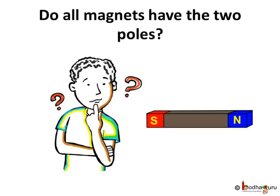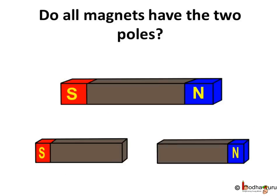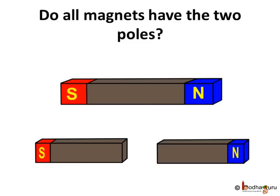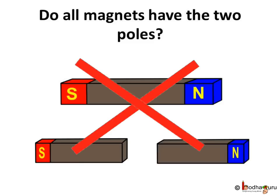You may wonder, do all the magnets have two poles? What would happen if the magnet is cut into two parts? You may think that one part will take the North Pole and the other part will take the South Pole. But this is wrong! Surprised? Let us test it.